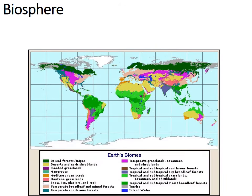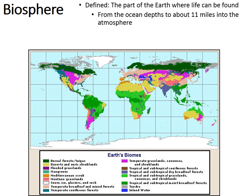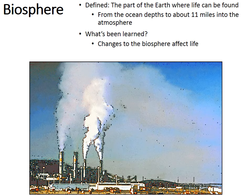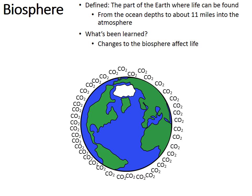Zooming out to the final level, we come to the biosphere — the part of the earth where we can find life. The picture here shows all the biomes of the earth: deserts, tundras, taigas, tropical rainforests. All the biomes combined make up the biosphere, stretching from the depths of the ocean to about 10-11 miles up into the atmosphere. By studying the biosphere, we've learned that changes to it can affect all life — for example, humans putting out large amounts of carbon dioxide for centuries, altering temperatures and climate patterns around the entire earth.